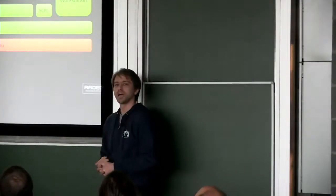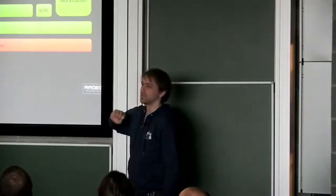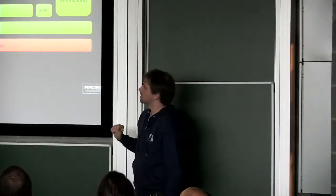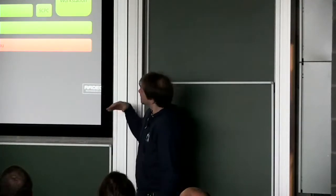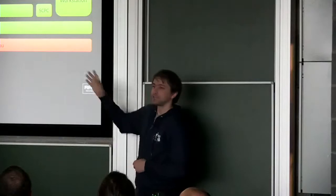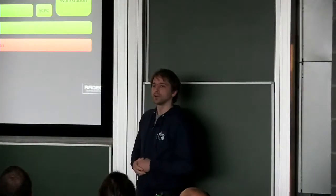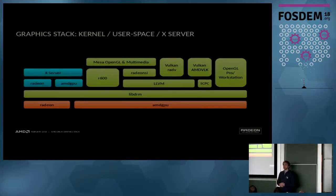I like to start with a picture that shows the high-level components. At the bottom in red you have two kernel modules: the Radeon and the AMD GPU — the more modern kernel module. They do the mode setting, the memory management, all that. Above that you have user space, so there is this thin libDRM layer, and on the left-hand side components that are part of the X server — the general device-independent code and input code, but also some graphics device-specific code.